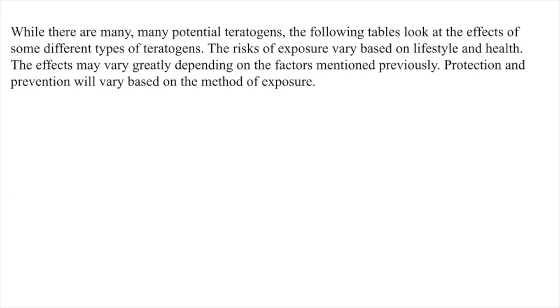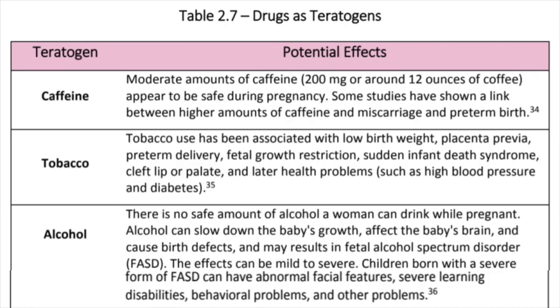The following tables look at the effects of some different types of teratogens. Caffeine: moderate amounts of caffeine — 200 mg or around 12 ounces of coffee — appear to be safe during pregnancy. Some studies have shown a link between higher amounts of caffeine and miscarriage and preterm birth. Tobacco use has been associated with low birth weight, placenta previa, preterm delivery, fetal growth restriction, sudden infant death syndrome, cleft lip or palate, and later health problems such as high blood pressure and diabetes.